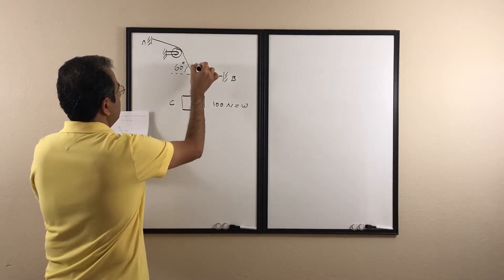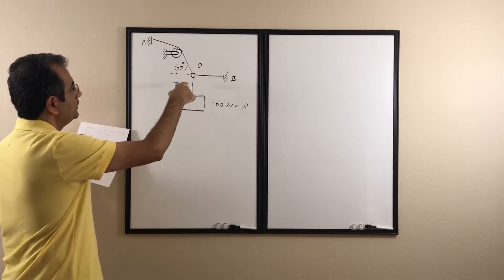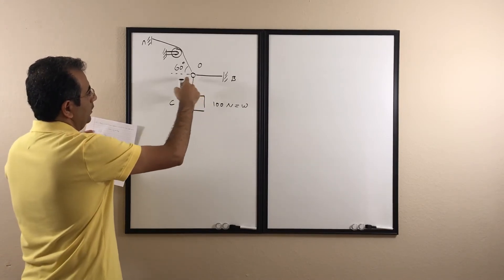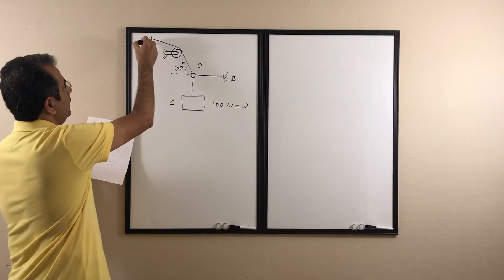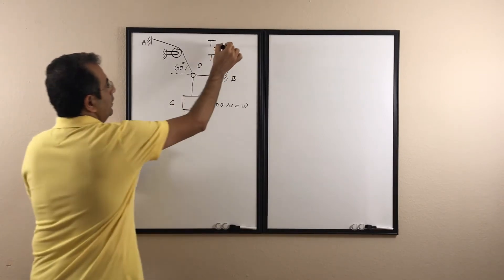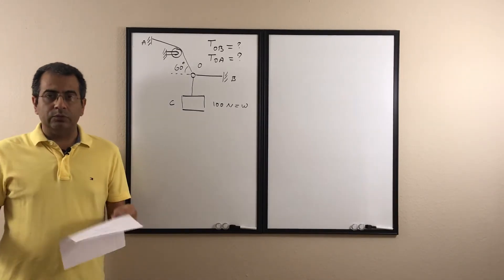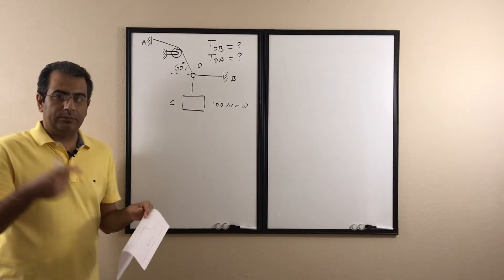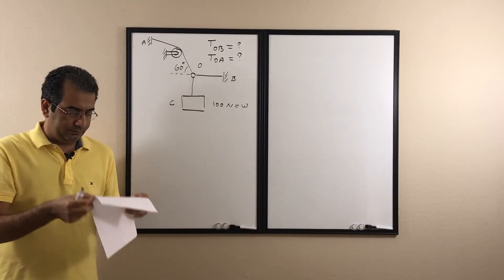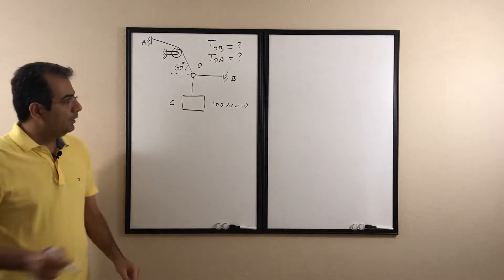There's a rope connecting the ring to the wall at point B, and another rope going up connected to the wall at point A, with a pulley holding that rope in place. The angle is 60 degrees and the ring is at point O. We have the box connected with three ropes — one rope connected directly, and two ropes connected to point O. We want to find the tension in rope OB and the tension in rope OA.